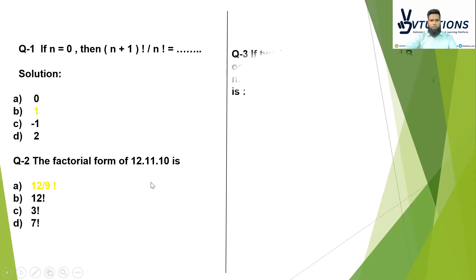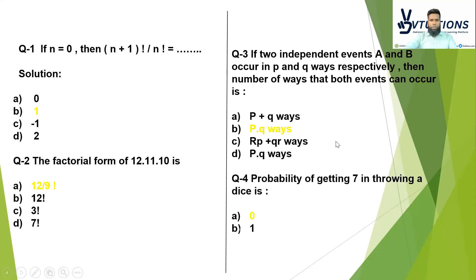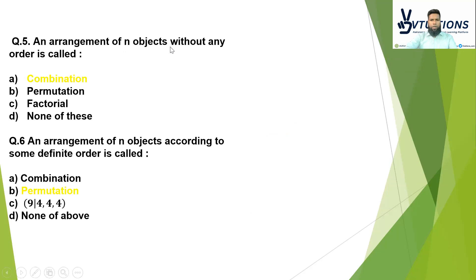Now we move to question number three, dear students: if two independent events A and B occur in p and q ways respectively, then the number of ways that both events can occur is what? The answer is p·q ways. Dear students, in board exams such questions come quite often. Next: probability of getting seven in throwing a dice is what? The answer is zero — zero probability.